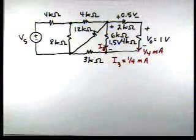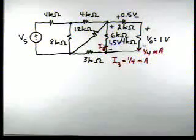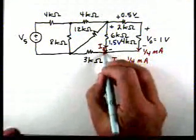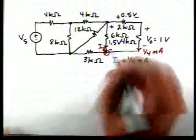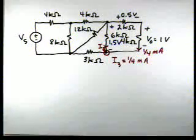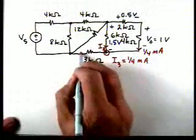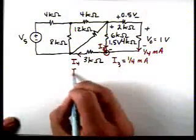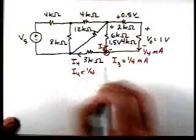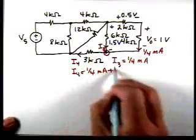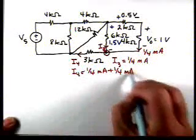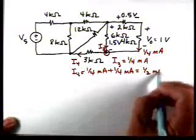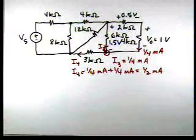Now, if we apply Kirchhoff's current law down at this node at the bottom, then we know this current we'll call I4. I4 is going to be 1 quarter milliamp plus 1 quarter milliamp to be 1 half of a milliamp.